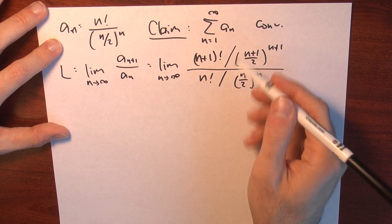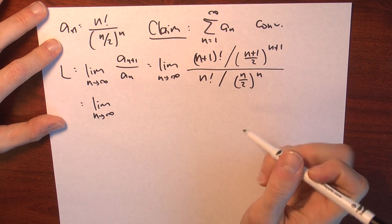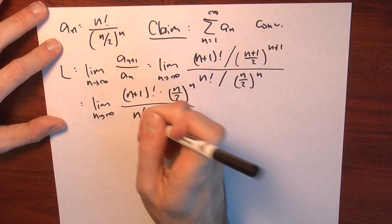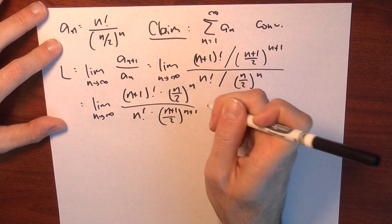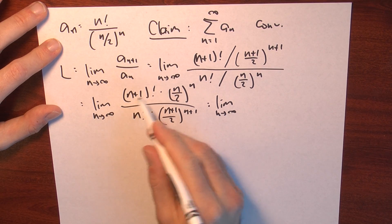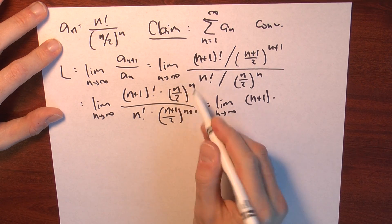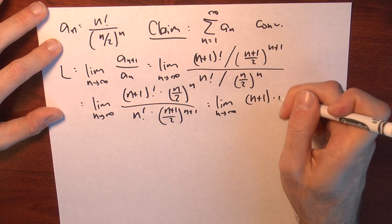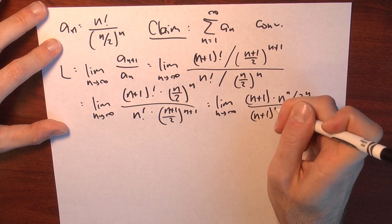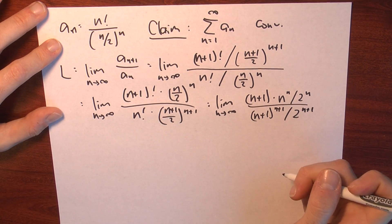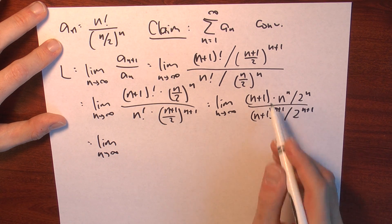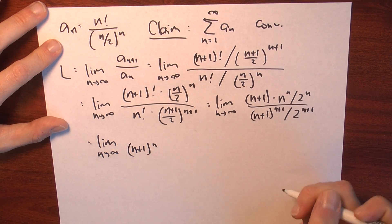That's a bit of a mess because I've got fractions in the numerator and denominator, so I'm going to simplify. I can rewrite that as the limit as n goes to infinity of (n+1)! times (n/2)^n, divided by n! times ((n+1)/2)^(n+1). I've got (n+1)! divided by n!, so most terms cancel except for (n+1). I can expand (n/2)^n as n^n / 2^n and ((n+1)/2)^(n+1) as (n+1)^(n+1) / 2^(n+1). Then I can cancel one factor of (n+1) from the denominator, leaving (n+1)^n in the denominator.